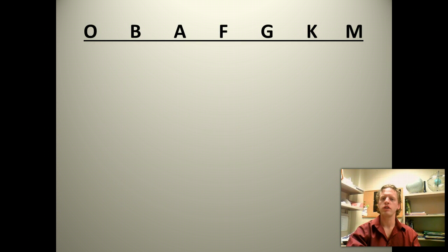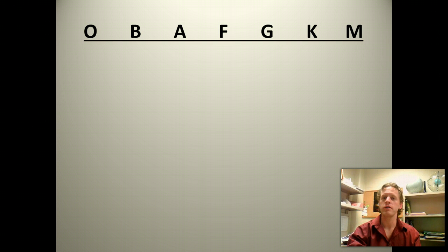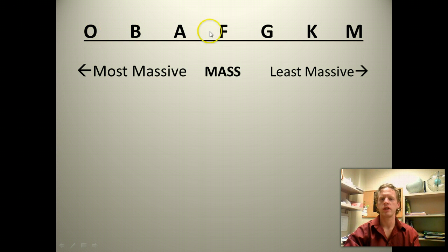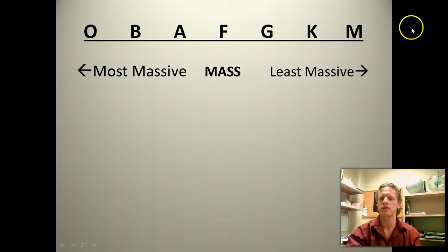Going through each of the properties and how mass, luminosity, color, temperature, radius, and lifetime are all related to classification: first, mass. The most massive stars are the O and then the B-type stars. On the other end, the G, K, and finally M stars are the least massive.